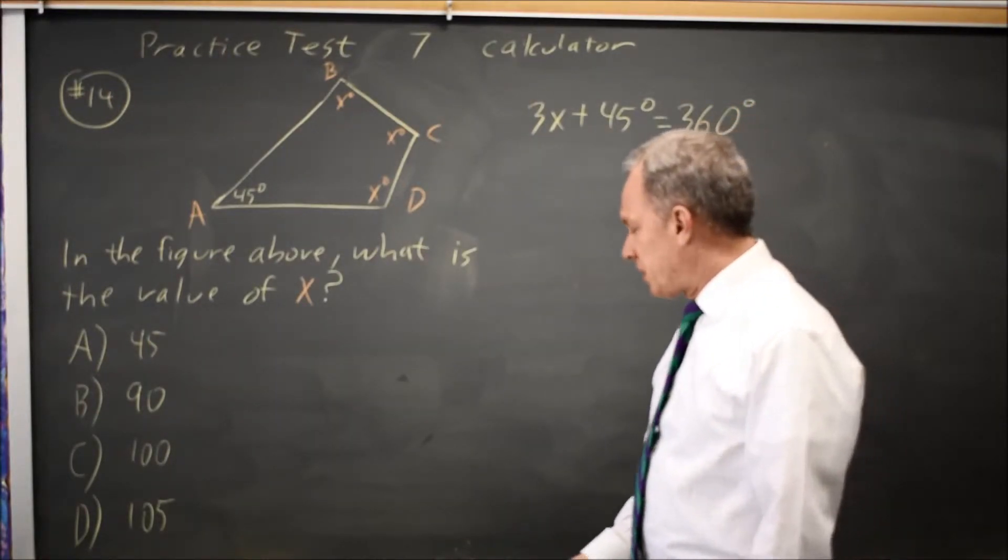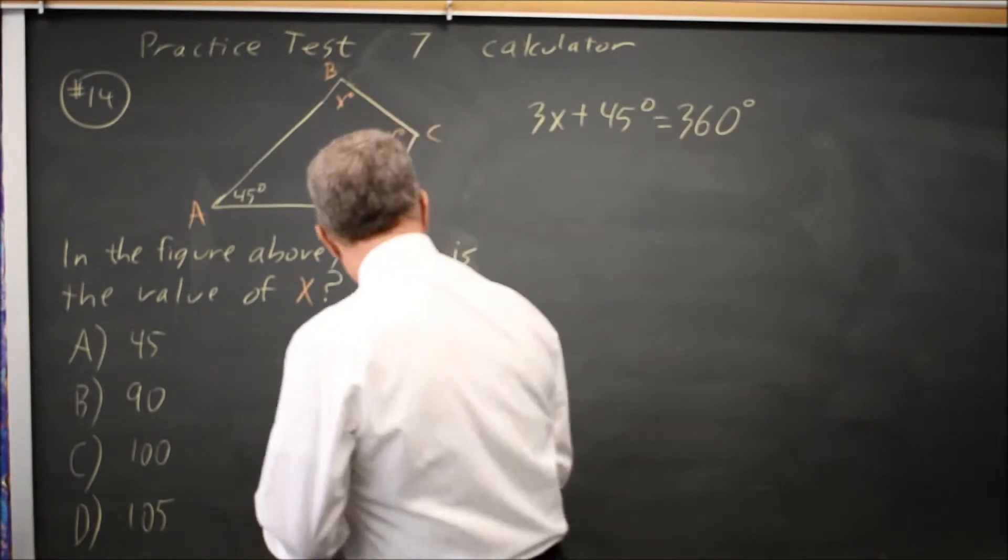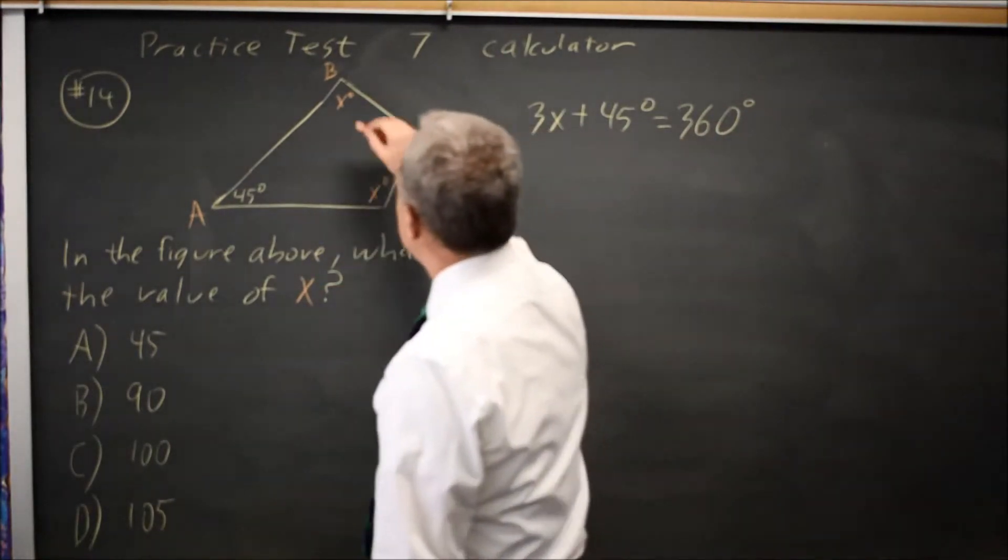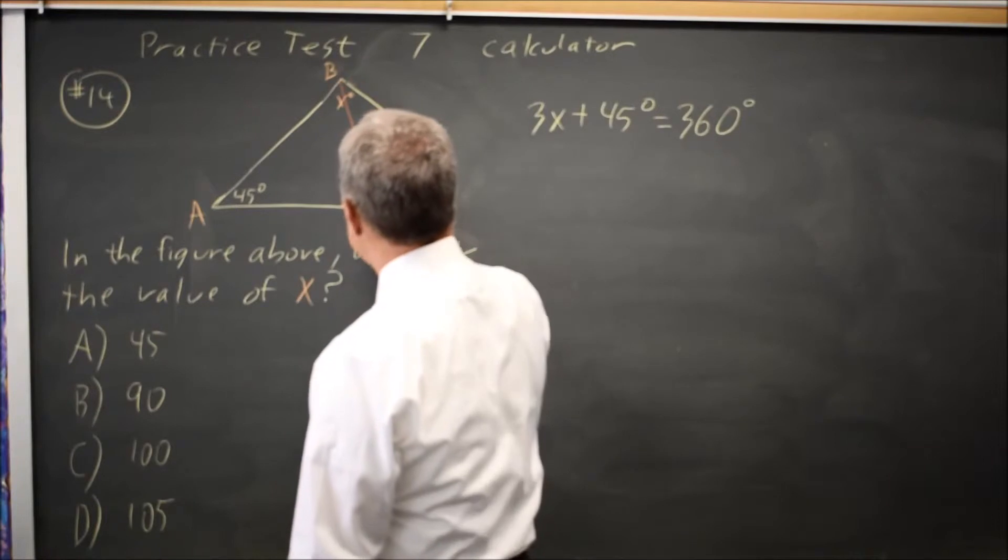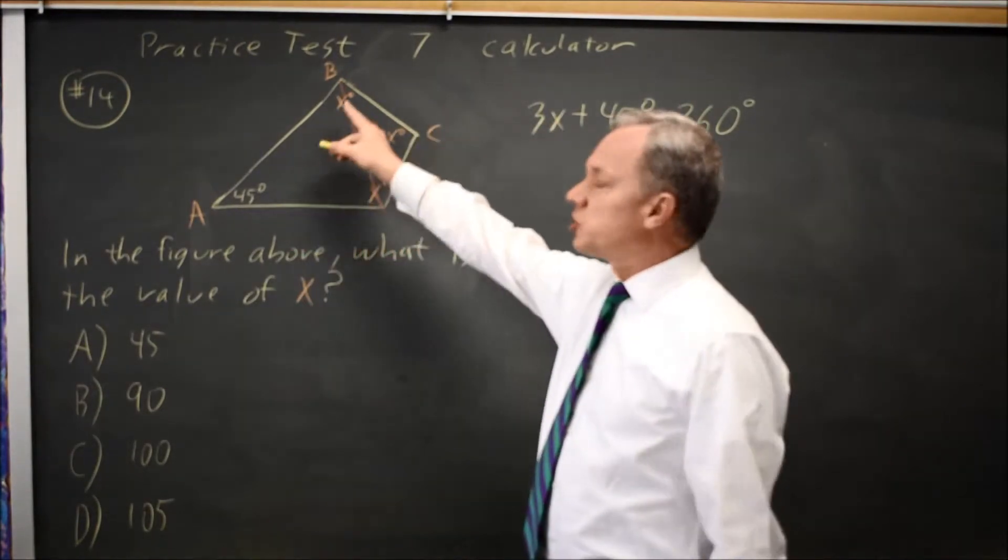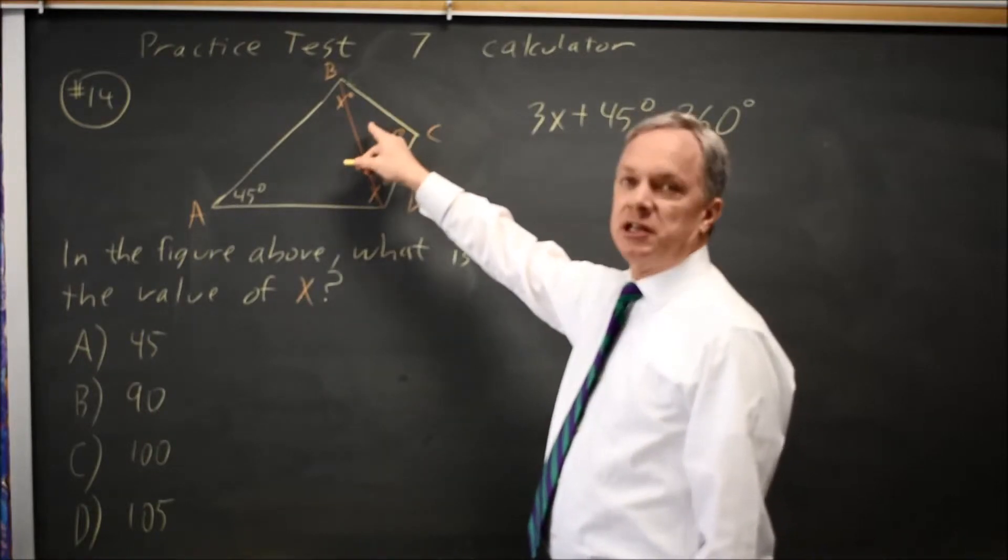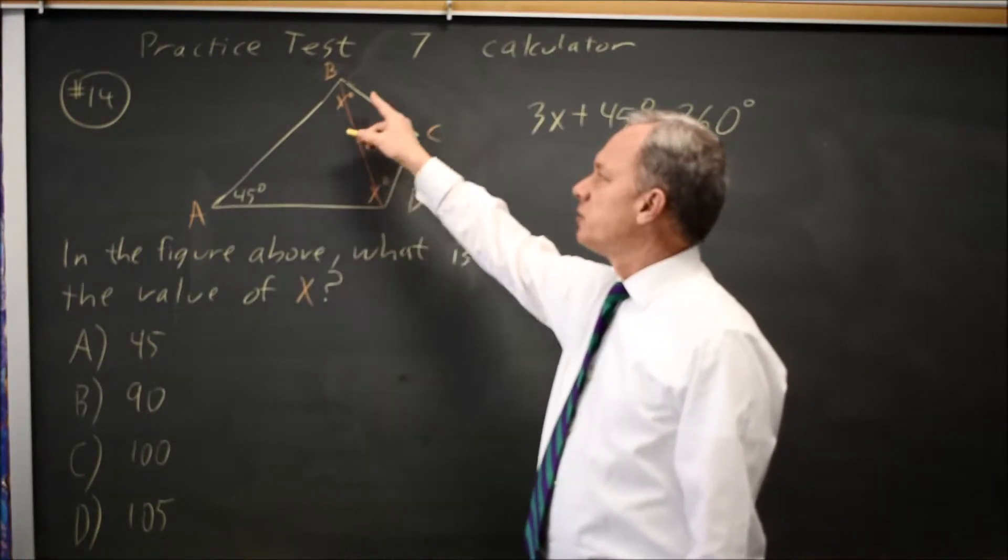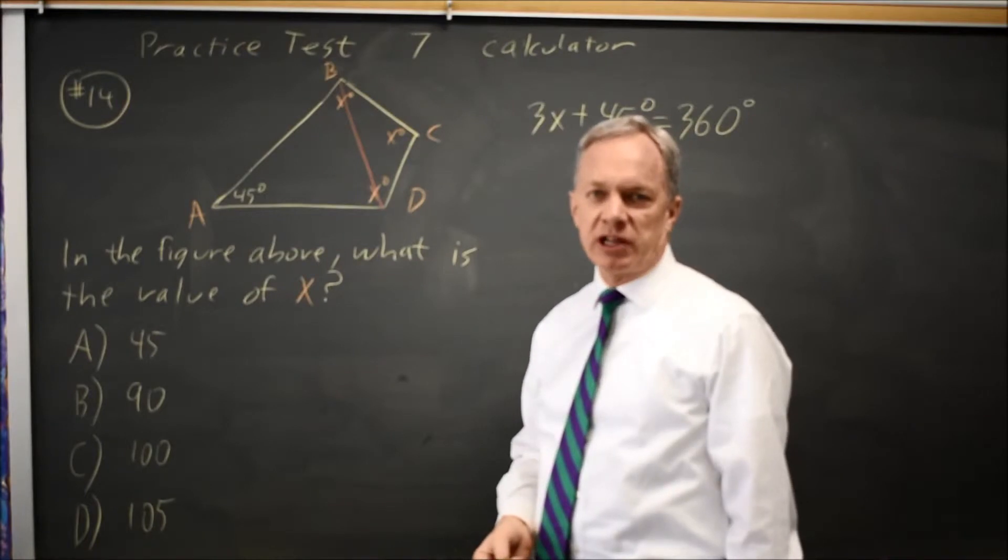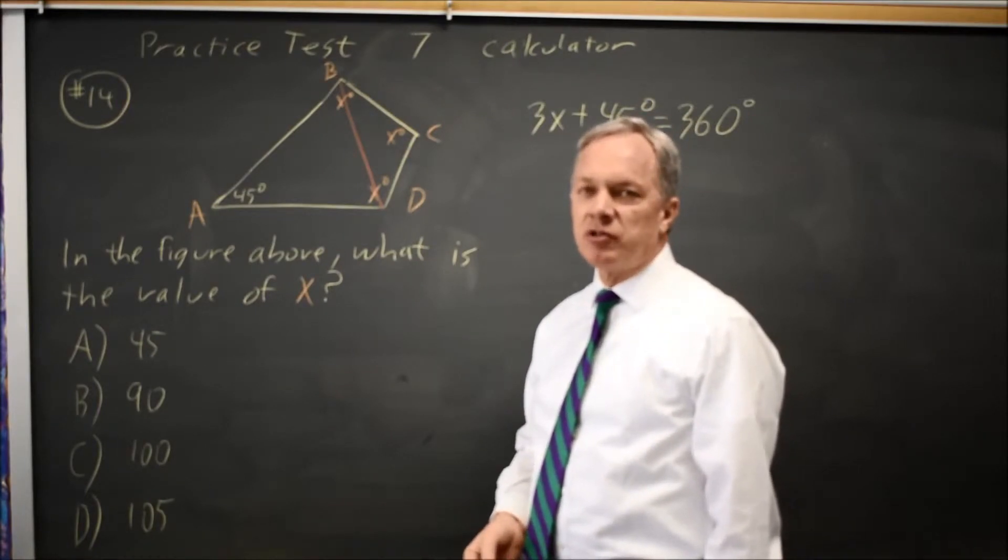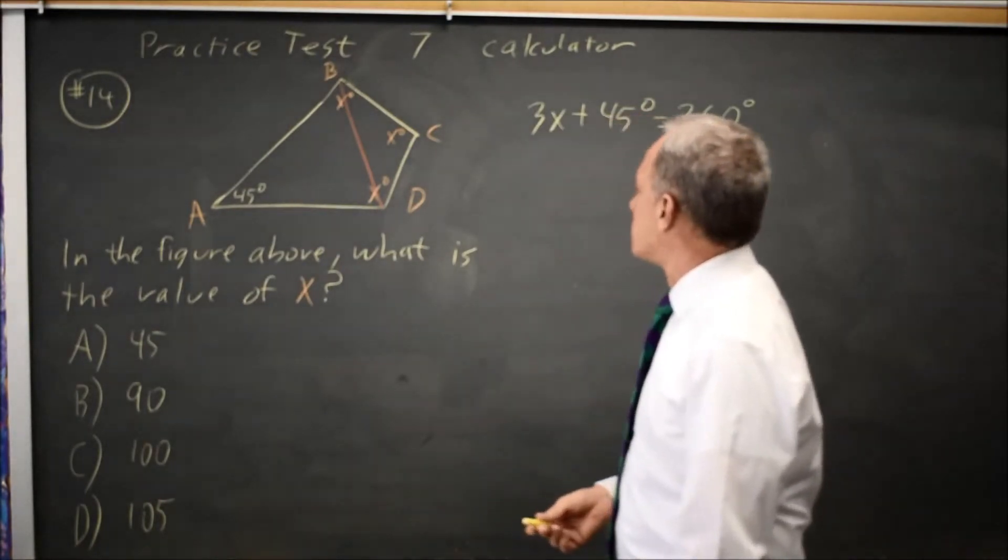If you forget that number, you can draw a line connecting two vertices and that forms two triangles and the angles of those two triangles add up to 180 plus 180 is 360 and they also equal the total angles from the original quadrilateral. So that's a reminder if you forget the formula based on the number of vertices.